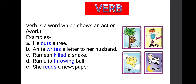Now let us see the third part of speech, that is verb. Verb is a word which shows an action. Now you people repeat after me: verb is a word which shows an action. The meaning of action is verb. First example: he cuts a tree. What is his action here? Cuts. So cuts will become a verb.